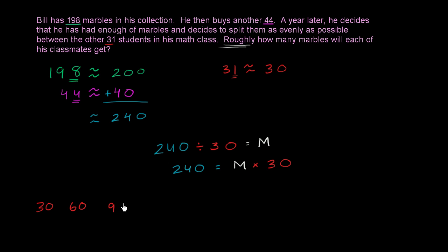So 30, 60, 90. Notice this is very similar to taking multiples of 3, but we just have a 0 now. The multiples of 3 are now in the tens place, and now we have a 0 in the ones place. 90, 120, which is just a 12 with a 0, 150, 180, 210, 240.